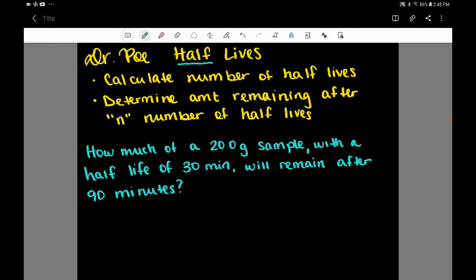So today we're going to talk about how to calculate the number of half-lives. If you're given a total amount of time and the length of time of a half-life, you can figure out how many half-lives there are. And then we're going to determine the amount remaining after that certain number of half-lives.